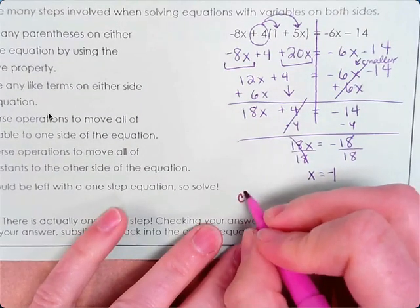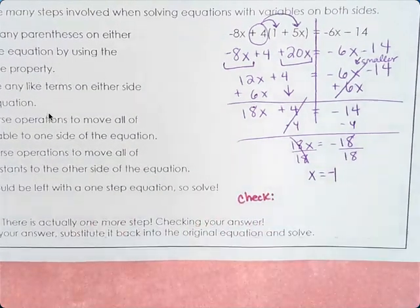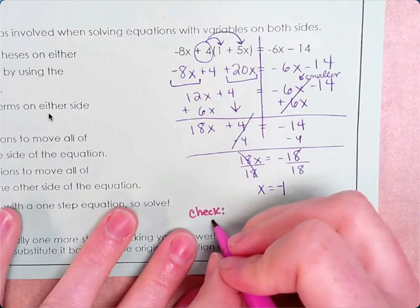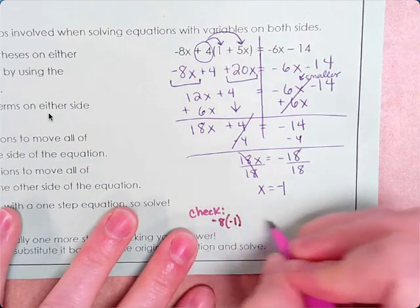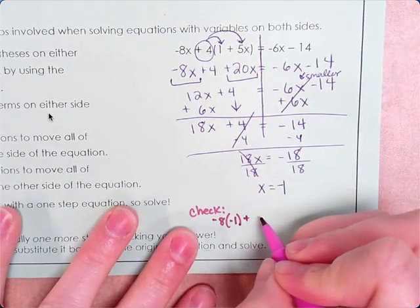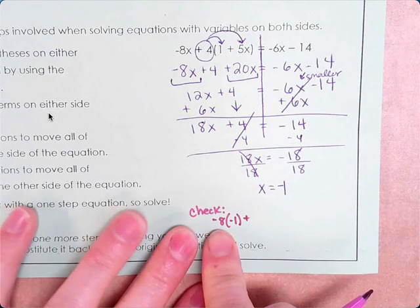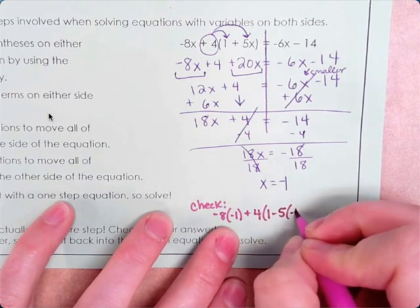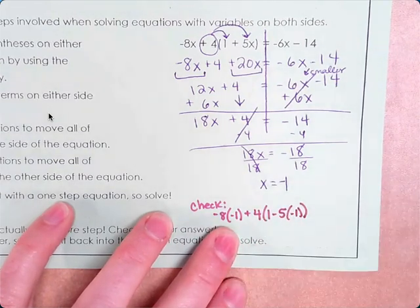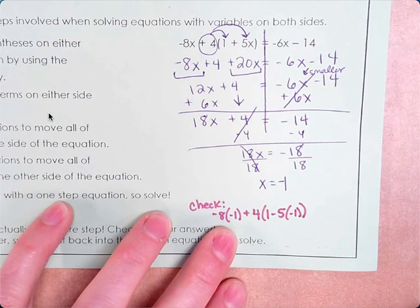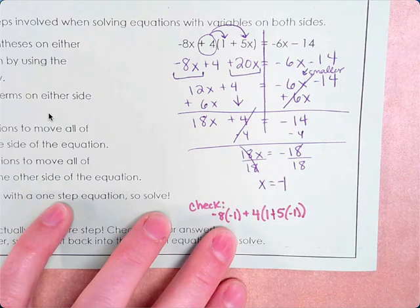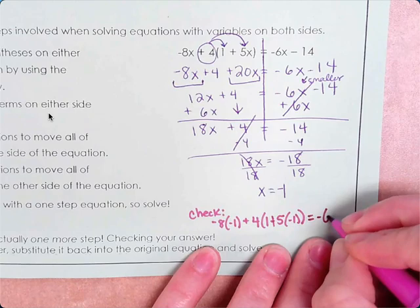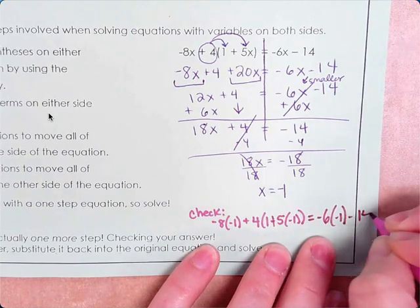Yes, so now we need to check. You plug it into the original equation. So when you check, I do want you to write down what you're putting in the calculator. So it's negative 18 times a negative 1. Negative 8. I don't know why I said that. And then plus 4, parentheses, 1 minus 5 times a negative 1. Close the parentheses. It was 1 plus 5. Oh, there we go. So glad y'all are paying attention. Because I would have had the wrong answer.